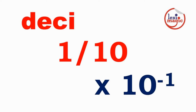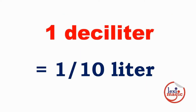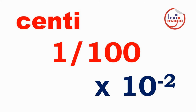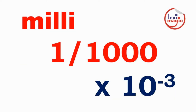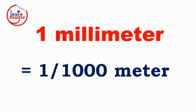The prefix deci indicates one tenth of a unit. A deciliter would be one tenth of a liter. The prefix centi indicates one hundredth of a unit. A centimeter is one hundredth of a meter. The prefix milli indicates one thousandth of a unit. A millimeter is one thousandth of a meter.